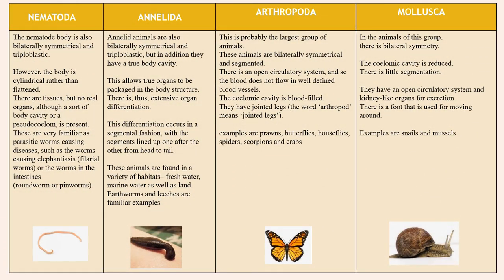The next group is Nematoda. The nematode body is also bilaterally symmetrical and triploblastic, similar to Platyhelminthes. However, the bodies are cylindrical rather than flattened. There are tissues but no real organs, although a sort of body cavity or pseudocoelom is present. These are parasitic worms; examples include worms that cause elephantiasis and roundworms.